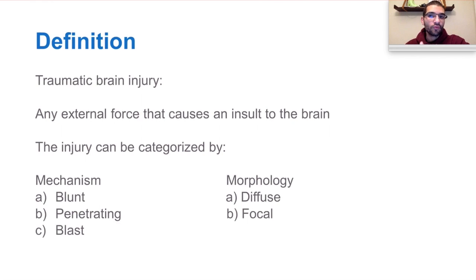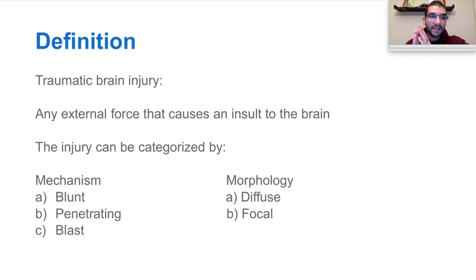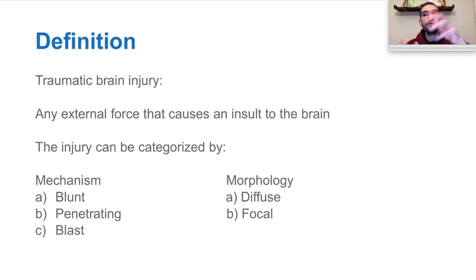Traumatic brain injury is essentially any external force that causes an insult to the brain. It can be categorized by mechanism — for example, blunt injury, which is an acceleration-deceleration kind of brain injury; penetrating injury, where a projectile goes through the skull into the brain, lacerates the tissue, and causes tissue compression and expansion; or blast injury such as from a grenade, seen often in soldiers at war. This energy is transmitted through the skull and vasculature to the brain, causing very rapid brain edema over hours, as opposed to the 12 to 24 hours seen with other types of brain injuries.